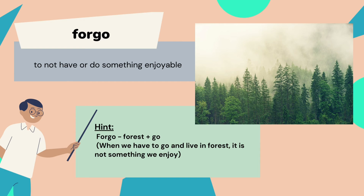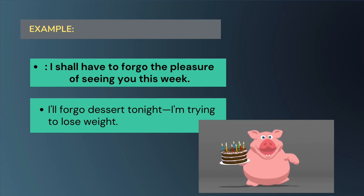The next word is 'forgo,' meaning to do without or not have something enjoyable — to give up or surrender something. The hint to memorize: 'forgo = forest + go' — when we have to go and live in the forest, it is not something we enjoy, so we have to forgo that enjoyment or feeling of pleasure.